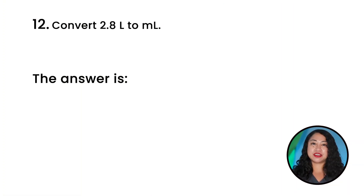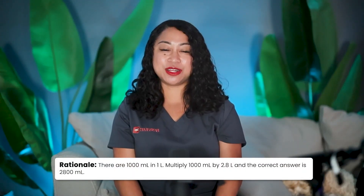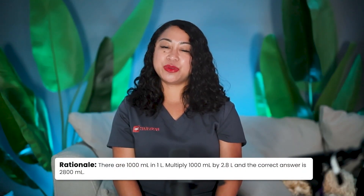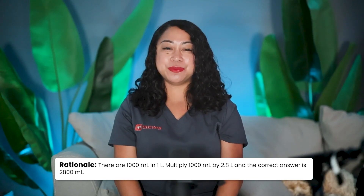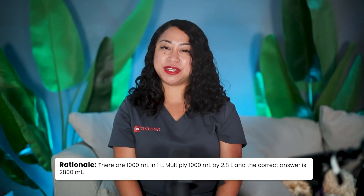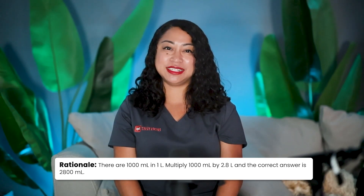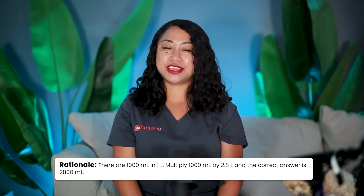Question 12: Convert 2.8 liters to milliliters. The correct answer is 2,800 milliliters. Rationale: there are 1,000 milliliters in one liter. Multiply 1,000 milliliters by 2.8 liters to get 2,800 milliliters.